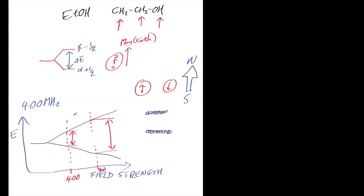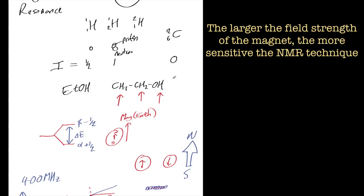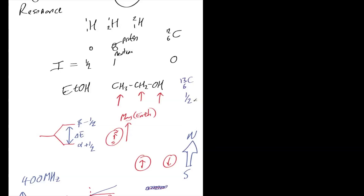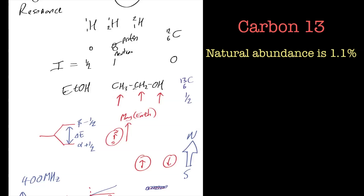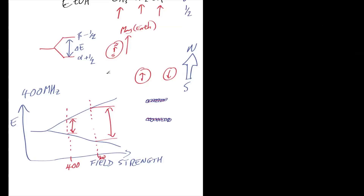The take-home message from that diagram is: the larger the field strength of the magnet, the bigger the energy difference, and the better the detection of the particular nucleus you're looking at - whether that's protons for hydrogens or carbons. Carbon-12 has no spin so you can't see it, but carbon-13 - with that extra neutron - has a spin of one-half, which is fantastic for NMR. Unfortunately it's in low natural abundance so it's not as sensitive as hydrogen, but we can and do detect it.